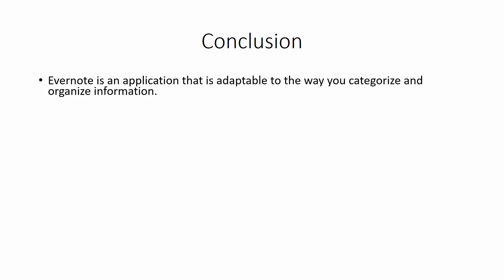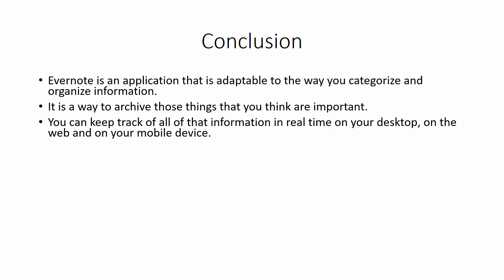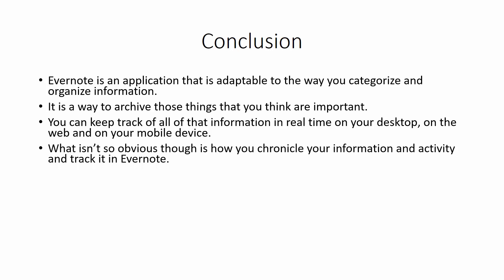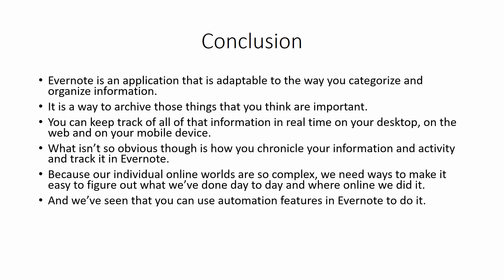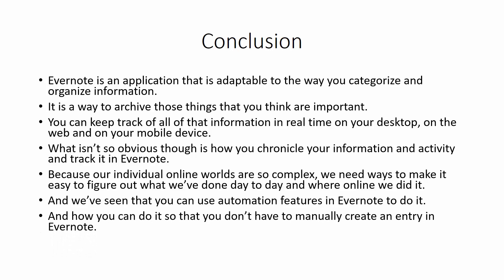In conclusion, Evernote is an application that is adaptable to the way you categorize and organize your information. It's a great way to organize those things that you personally think are important from day to day. You can keep track of all of that information in real time on your desktop, on the web, and on your mobile device. What isn't so obvious is how you chronicle your information and your activity and also track that activity in Evernote. In this course, we've seen that you can use automation features in Evernote to do that without having to manually create an entry.